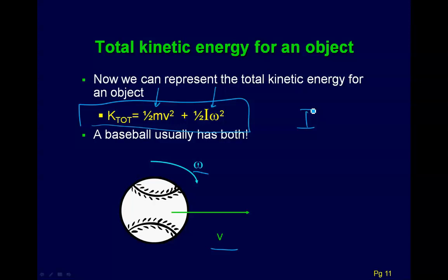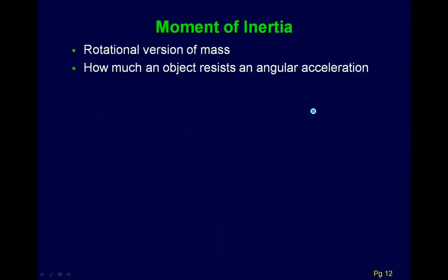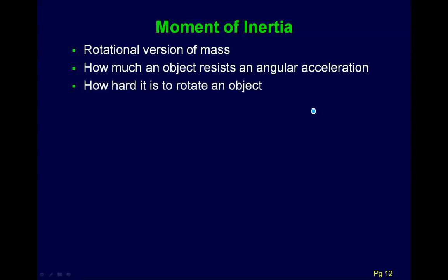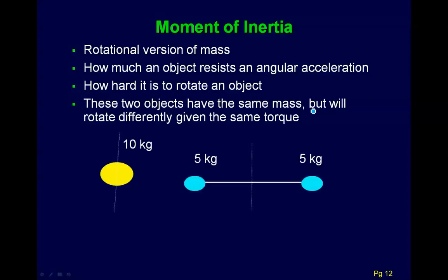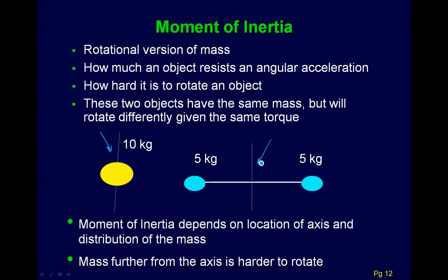We call i the moment of inertia — think of it as the rotational version of mass. Technically, it's how much an object resists an angular acceleration. The moment of inertia depends not just on the mass, but on the location of the axis and the distribution of the mass. In general, mass further from the axis is harder to rotate. The best example is an ice skater: when their arms are outward, they're harder to rotate and go slower; when they bring their arms in, with mass closer to the axis, they speed up.